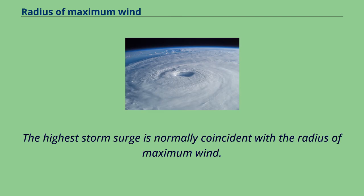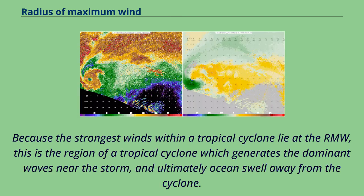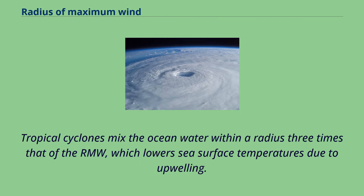The highest storm surge is normally coincident with the radius of maximum wind. Because the strongest winds within a tropical cyclone lie at the RMW, this is the region which generates the dominant waves near the storm and ultimately ocean swells away from the cyclone. Tropical cyclones mix the ocean water within a radius three times that of the RMW, which lowers sea surface temperatures due to upwelling.